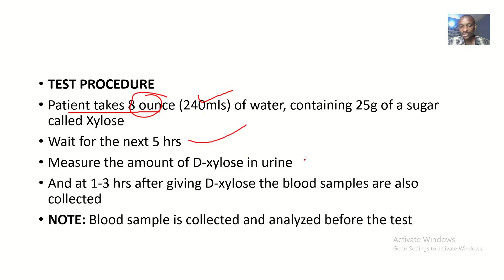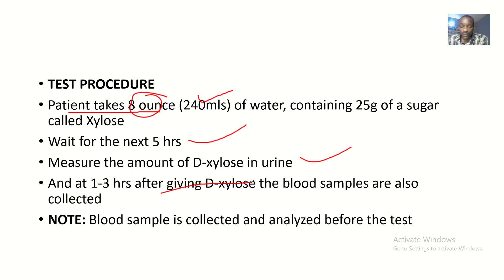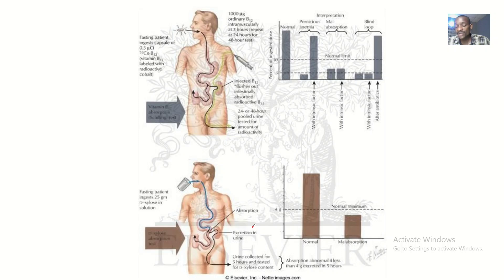After giving xylose, you wait five hours and then measure the amount of xylose in urine. For blood measurement, you wait about two to three hours after giving xylose, and then blood samples are collected. So for the procedure you have two options: measuring levels in blood or measuring levels in urine — each with a different time point. Blood samples are also collected and analyzed before the test to confirm there is no xylose present in the blood beforehand, to avoid altering the values.